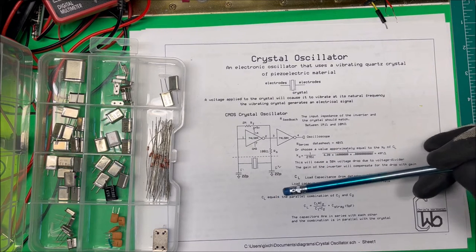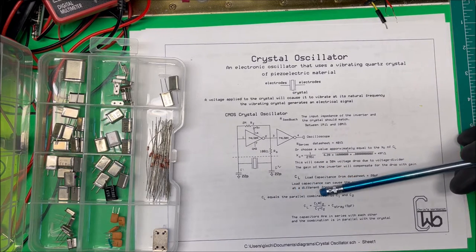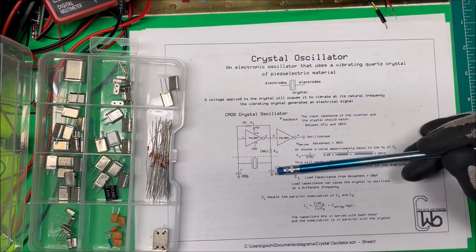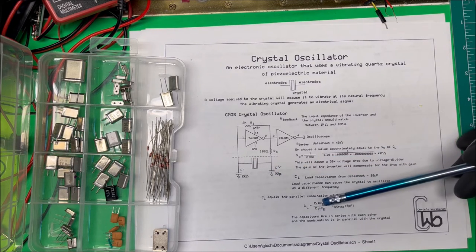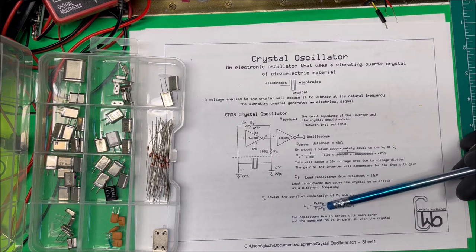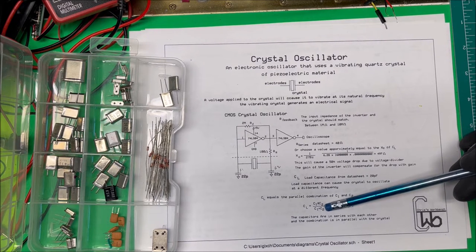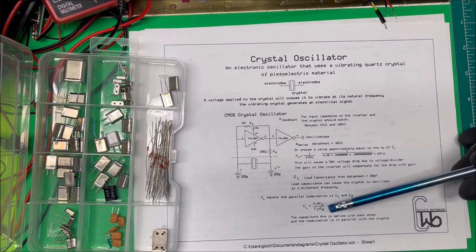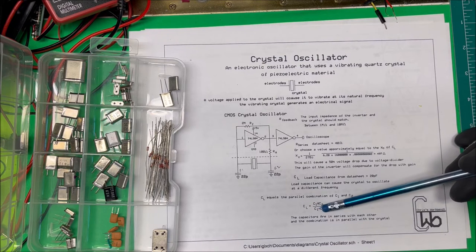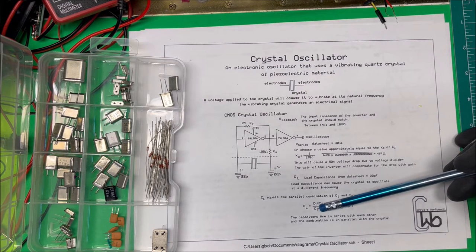So the CL is equal to the combination of C1 and C2, and they give you this formula here. When you look at this formula right off, you might say, well, it's not a parallel capacitance—for parallel capacitance you would just add them together. But this is for series.